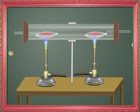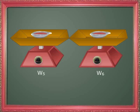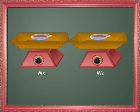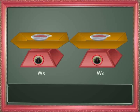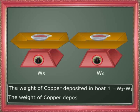Continue heating the tube and passing hydrogen gas till red copper powder is formed in the boats you have placed. Once you see the red copper powder deposits, stop heating and allow the tube to cool. Take out the boats and weigh them separately. You can get the weight of copper deposit in each boat by subtracting the weights of the empty boats from this weight.